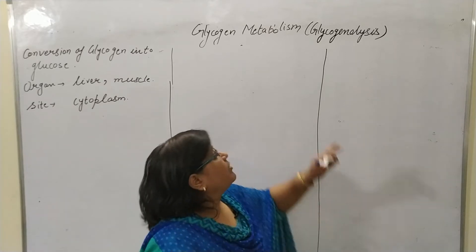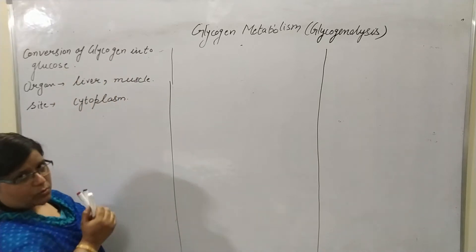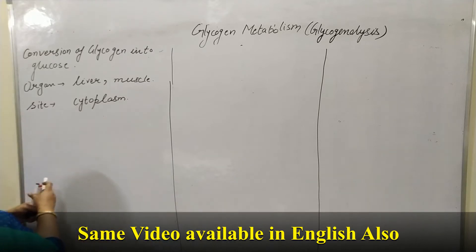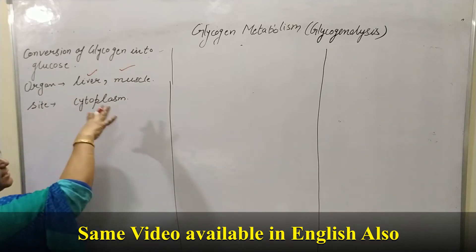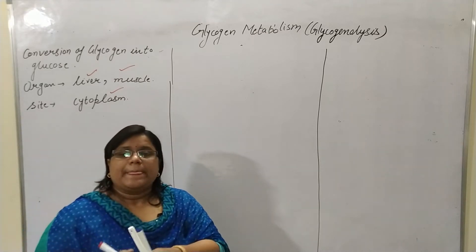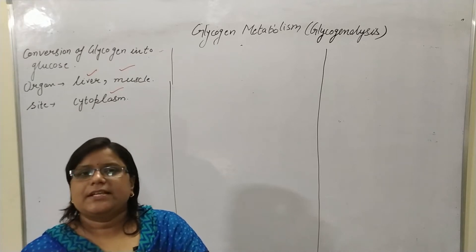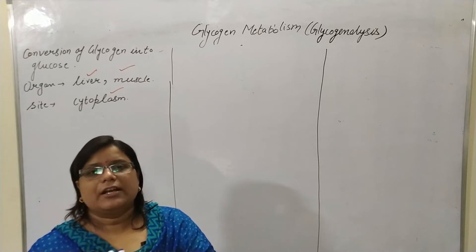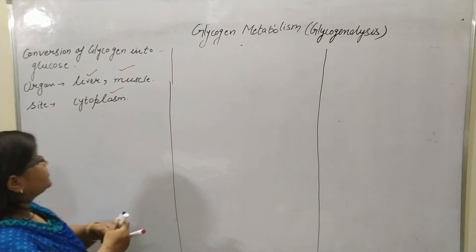The definition of glycogenolysis is the conversion of glycogen into glucose. The organ where glycogenolysis takes place is the liver and the muscle. The main site is the cytoplasm. In the liver, the end product of glycogenolysis is glucose, whereas in the muscle, the end product is glucose-6-phosphate.